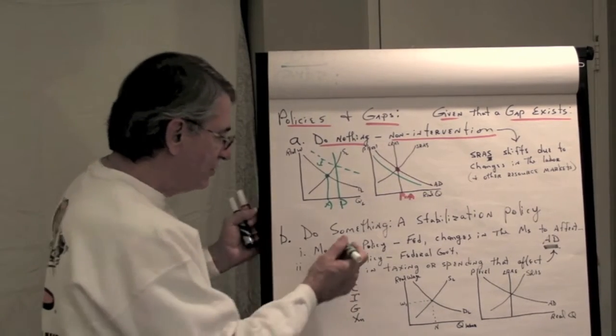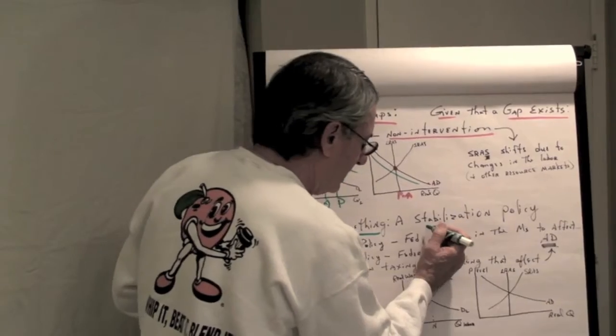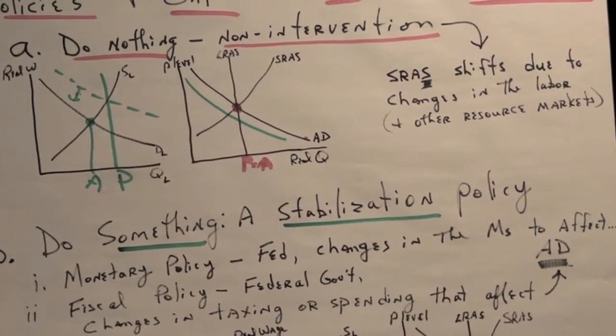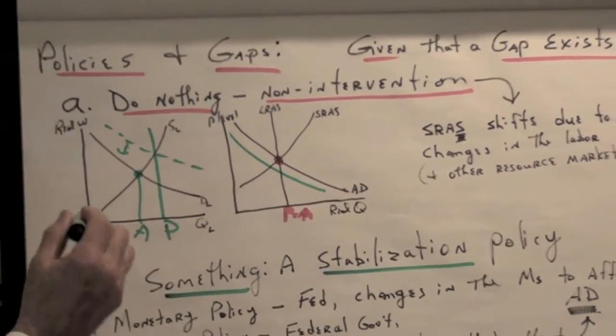Now, you have two choices. To do something, which is called a stabilization policy, or do nothing, which is non-intervention. If we do nothing, oh, I just messed up my labor markets here.